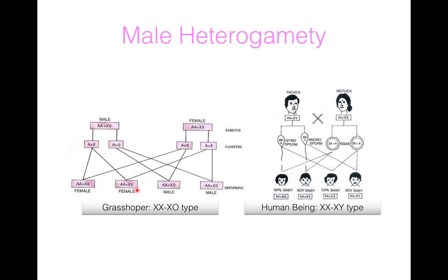The female produces only a single type of gamete, that is A plus X. When A plus X of male fuses with A plus X of female, a female is produced because it has two complete sets of autosomes and two X sex chromosomes. If the female gamete A plus X fuses with the sperm A plus zero, then a male is produced with two A and X0 chromosomes. Hence the male is heterozygous. This is XO type male heterogamety.